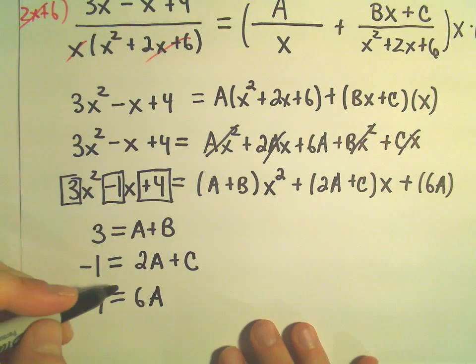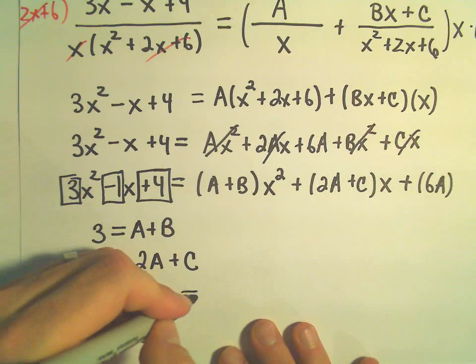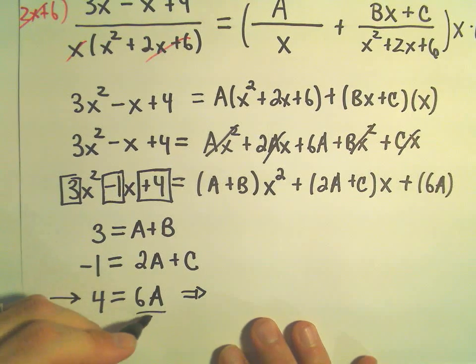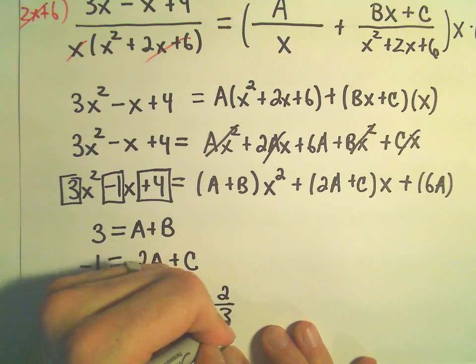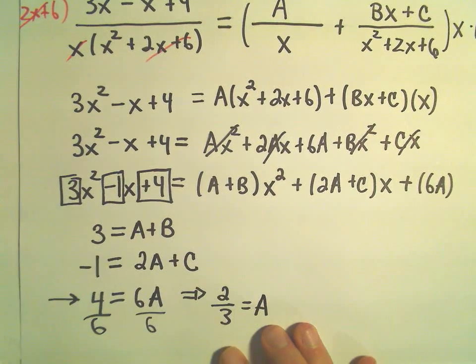And to me, this is kind of nice because I can just take this last equation and immediately divide both sides by 6. And that would give me 4 over 6 or it would give me 2/3 as my value for A.